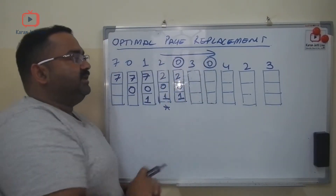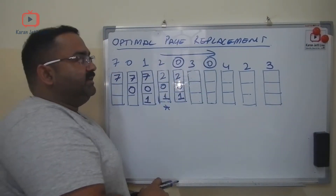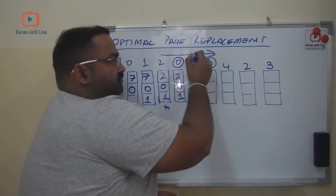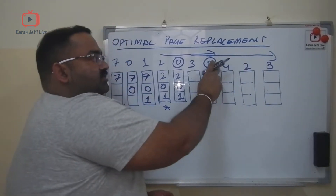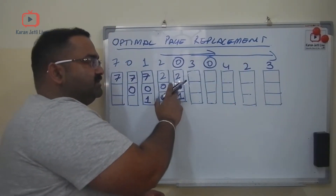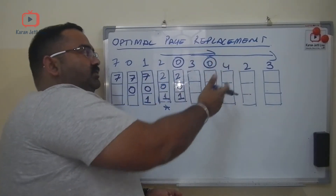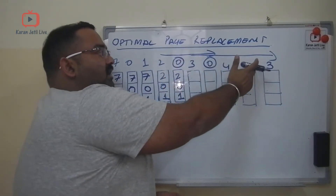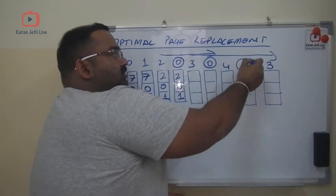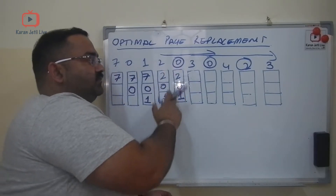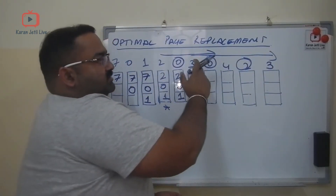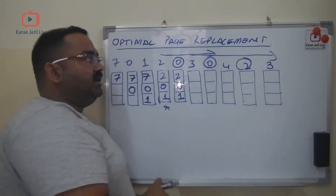Now comes 3. Again, we look into the future. The next page we need out of the current cache pages is zero, then two. So which page out of the cache do we not need in the future? That is page number 1 — we do not need 1.